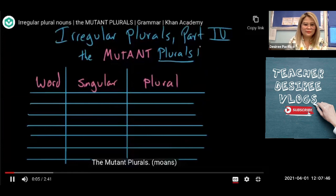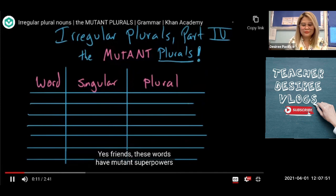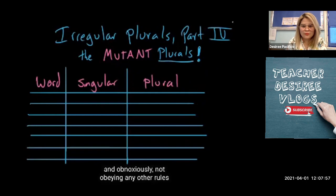Yes, friends, these words have mutant superpowers in that they can transform weirdly and obnoxiously, not obeying any other rules of English pluralization. But here's the cool thing — there are only seven words that behave this way.